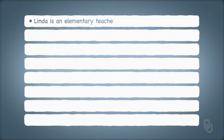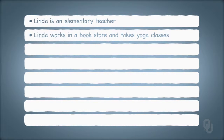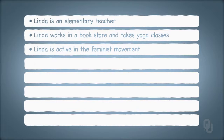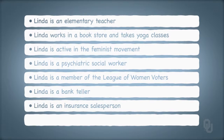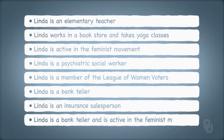Linda is an elementary teacher. Linda works in a bookstore and takes yoga classes. Linda is active in the feminist movement. Linda is a psychiatric social worker. Linda is a member of the League of Women Voters. Linda is a bank teller. Linda is an insurance salesperson. And finally, Linda is a bank teller and is active in the feminist movement.